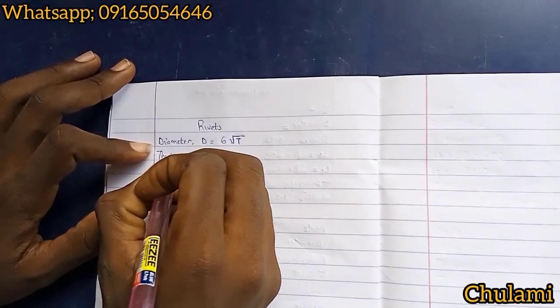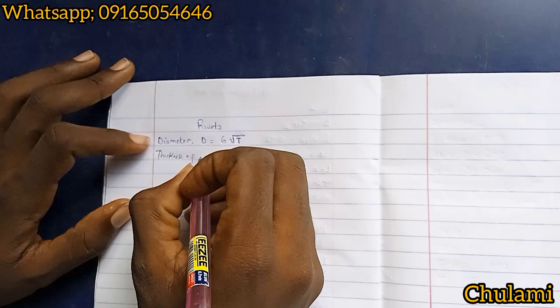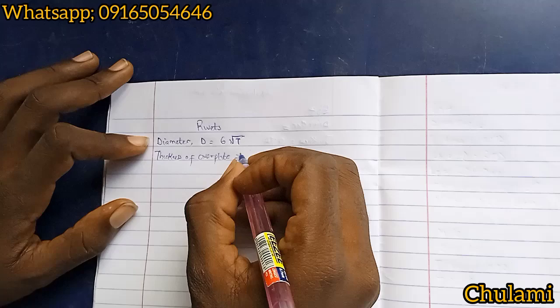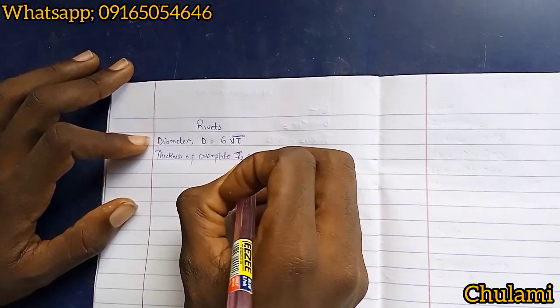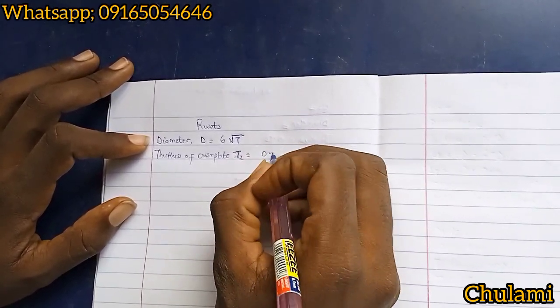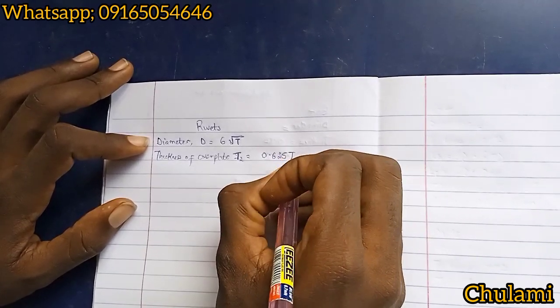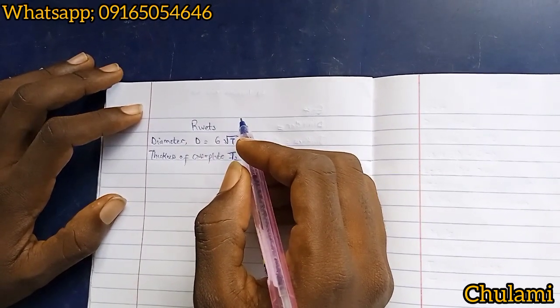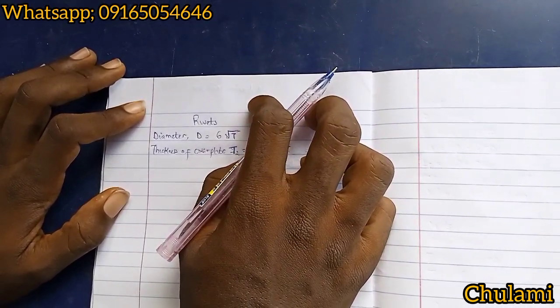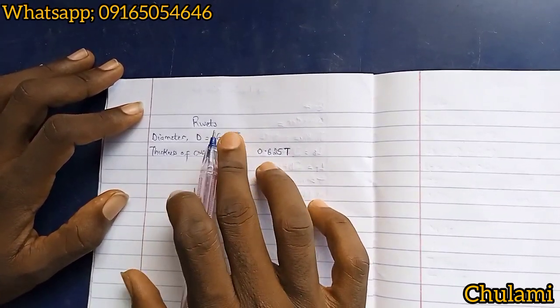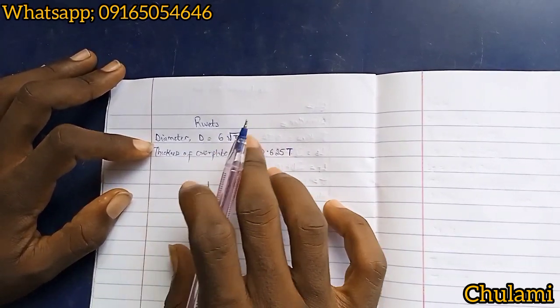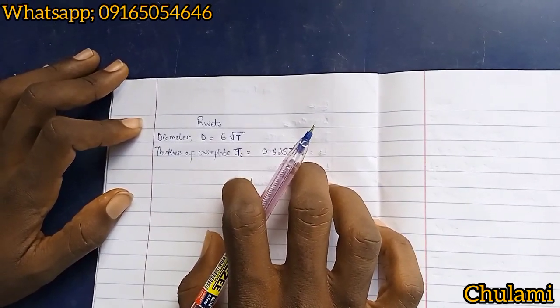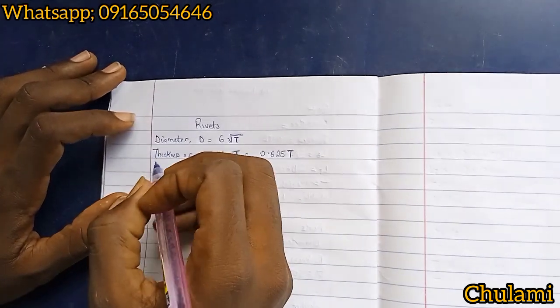Then we have thickness of cover plates or cover strap - I would denote this as t2 - is equals to 0.625t, where this t is thickness of the main plate. This applies mostly for butt joints when we are drawing double cover butt joints. But when in lap joints, we are just using the normal thickness, not thickness of the cover plates. In lap joints there is no cover plates, it's just the normal thickness.